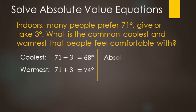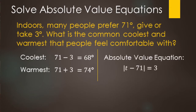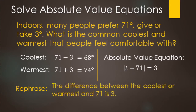Now what we want to do is change this into an absolute value equation. These are a little awkward at first, but here's the setup: the difference between the coolest or warmest temperature and 71 is 3 degrees. So the amount people like it to be — either 68 or 74 — the difference between that number and 71 is going to be 3 degrees. That 'give or take 3 degrees' would look like an absolute value equation.